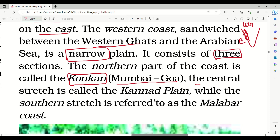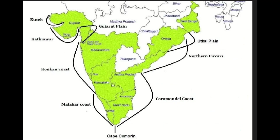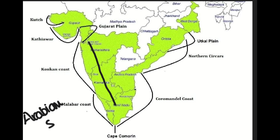The central part of the western coastal plains is called the Kannad Plain, while the southern stretch is referred to as the Malabar Coast — this is very important. Let us see this on the map. Here we are looking at the Western Ghats, with the Arabian Sea on this side.